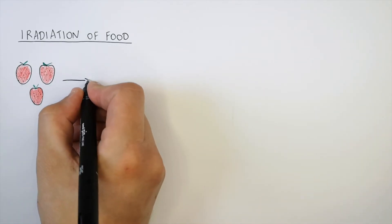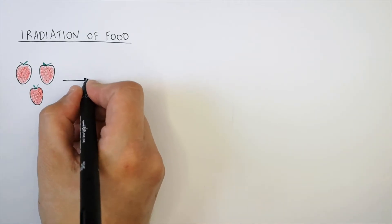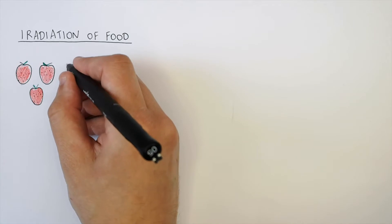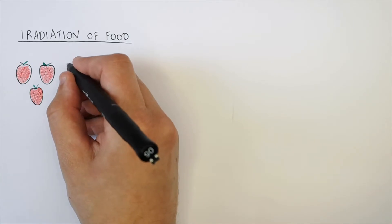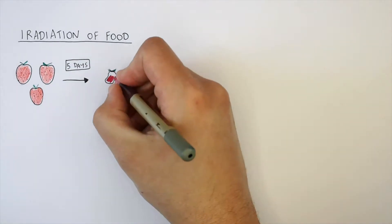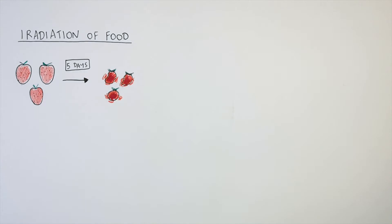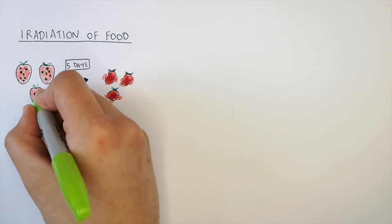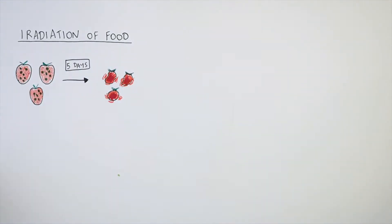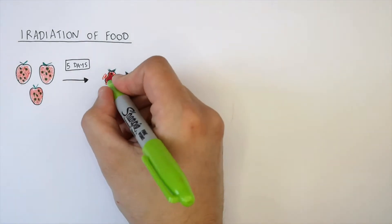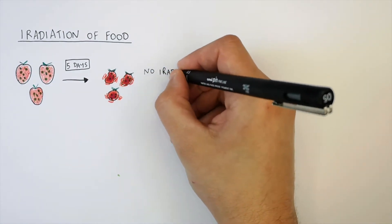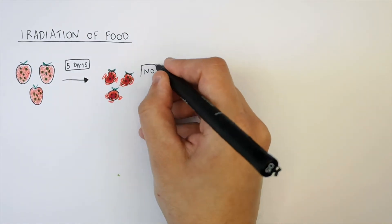Gamma rays can be used in the irradiation of food. These here are fresh strawberries that have not been irradiated using gamma radiation. So after five days, they're going to go rotten. That is because the bacteria have not been killed using irradiation methods, so the bacteria are then going to decompose the fruit more quickly. This is what happens if there is no irradiation using gamma sources.